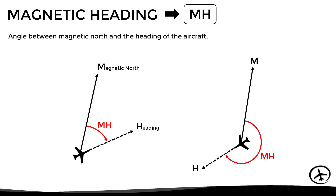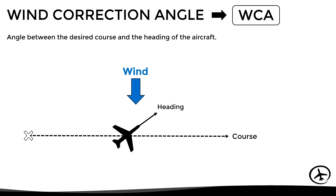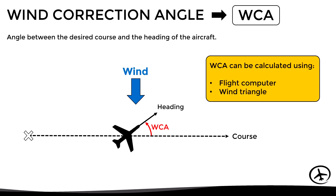Apart from these heading concepts, there is another one related to the drift angle: the wind correction angle, abbreviated as WCA. This is the angle between the desired course and the heading of the aircraft. This angle can be calculated using a flight computer or a wind triangle; however, for this explanation it is only necessary to know the basic concept of wind correction angle.